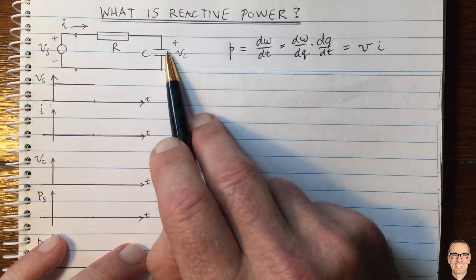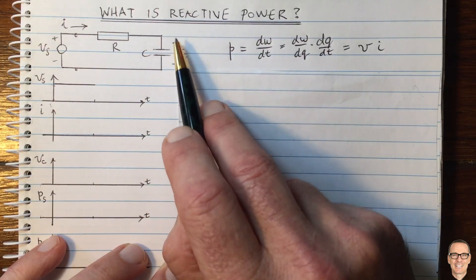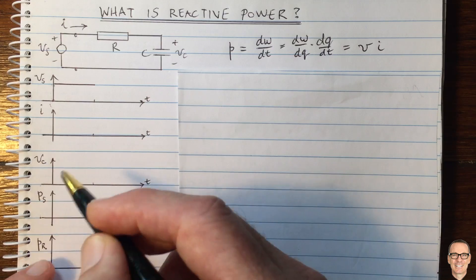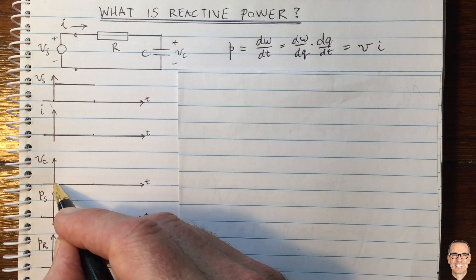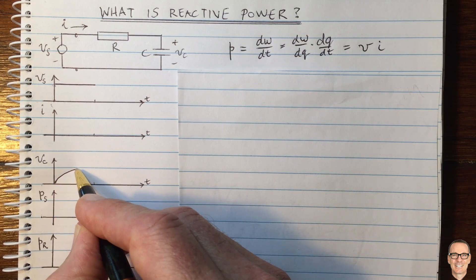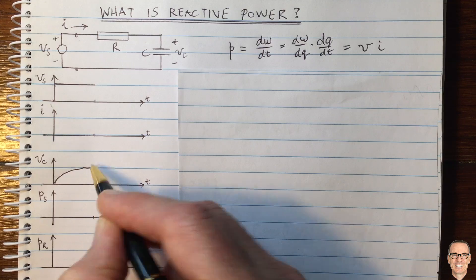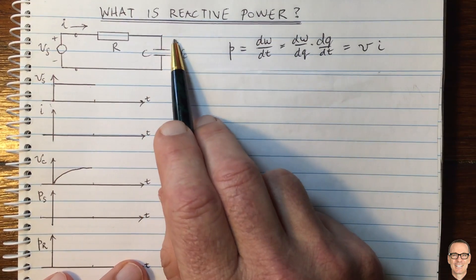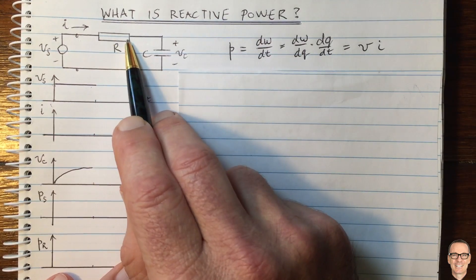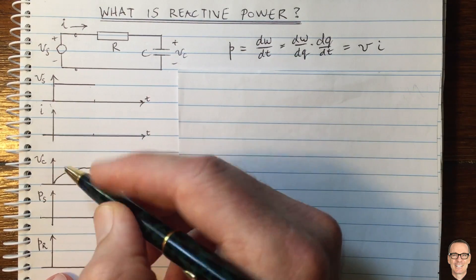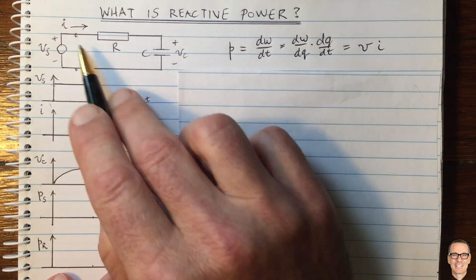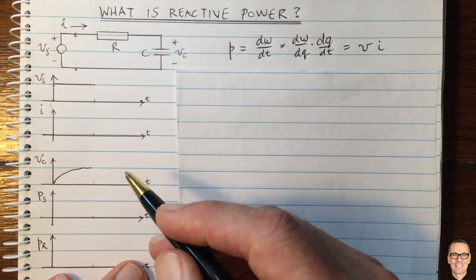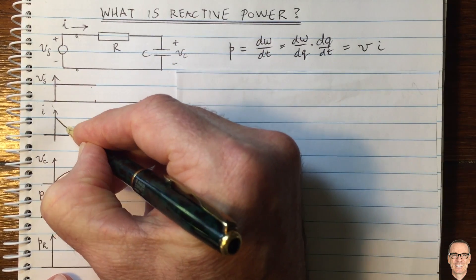As electrons are drawn off the plate, the voltage across the capacitor will increase, starting to rise until it reaches the same voltage as the source. At the same time, as the capacitor voltage increases, the voltage drop across the resistor gets less, so the current that was initially large from the jump will also start to decrease.